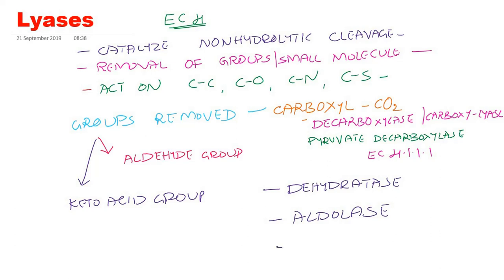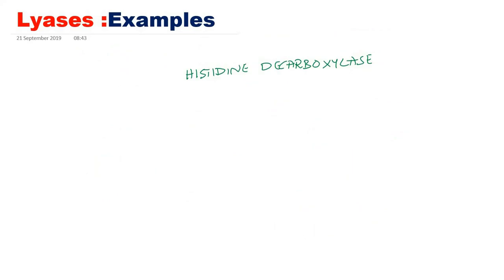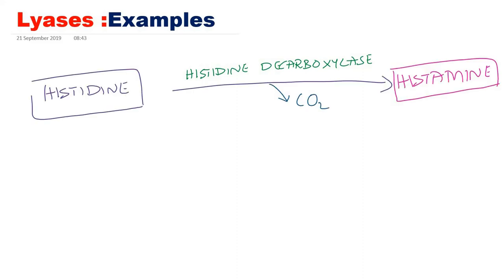If the product is very important, sometimes we call the reverse reaction a synthase. One specific example is histidine decarboxylase. This enzyme catalyzes the breakdown of histidine, removes its carboxyl group, and histidine is converted to histamine. The systematic name of histidine decarboxylase is histidine carboxylase-lyase. Please remember: after 'carboxylase' you must add a hyphen — it is histidine carboxylase-lyase, not simply carboxylase.